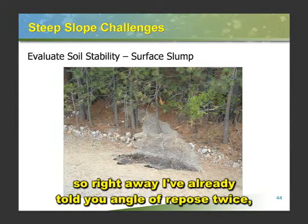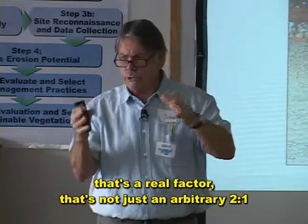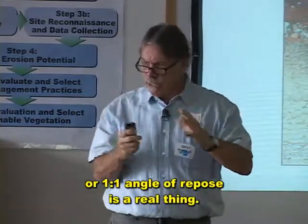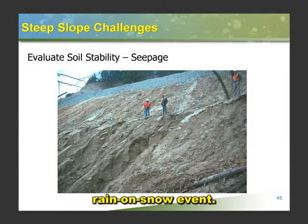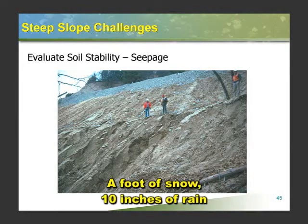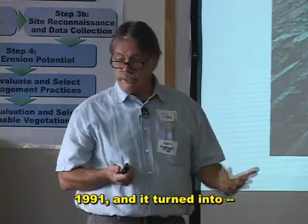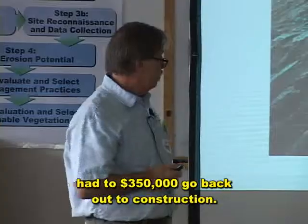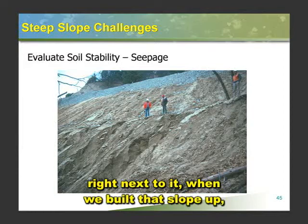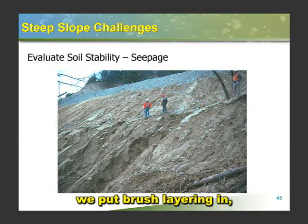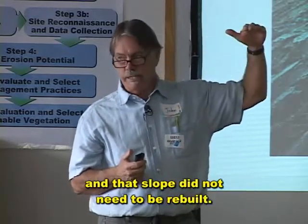So right away, I've told you angle of repose twice — you should be thinking that's a real factor. That's not just an arbitrary two-to-one or one-to-one. Angle of repose is a real thing. Here's one, one-and-a-half to one — same kind of thing, rain-on-snow event. A foot of snow, 10 inches of rain before any vegetation got established. 1991 — and it had to be $350,000 to go back out to construction. On the little sliver fill right next to it, when we built that slope up — these are 300 feet long — we put brush layering in. It just followed some old Caltrans specs, and that slope did not need to be rebuilt.